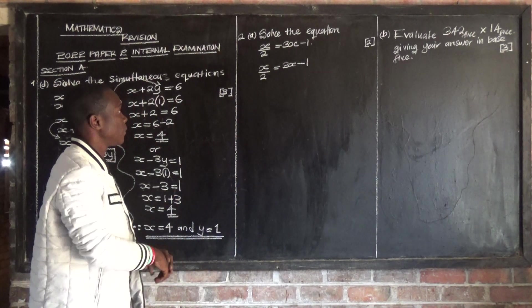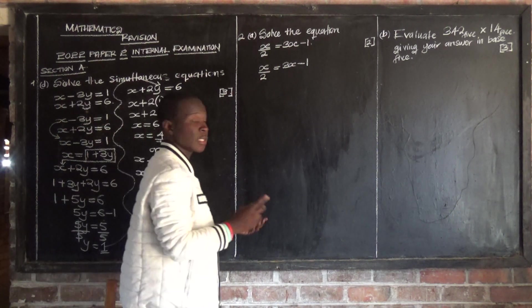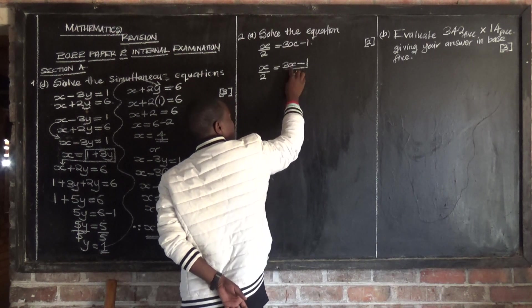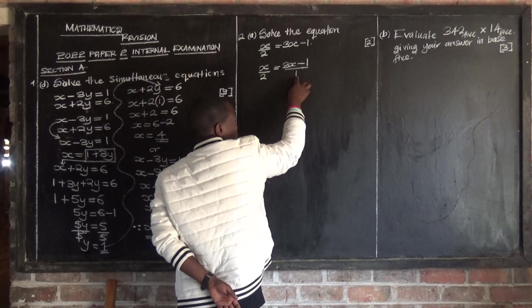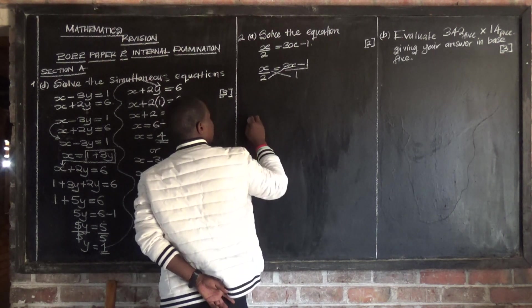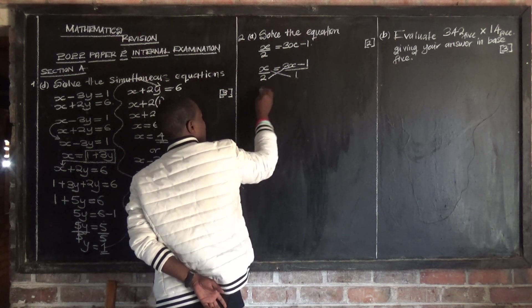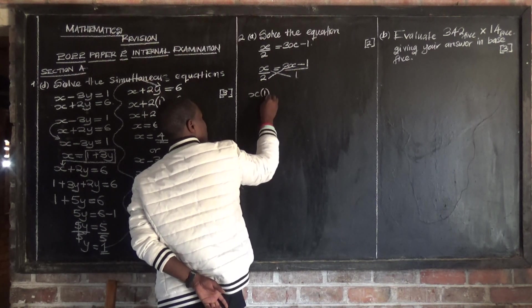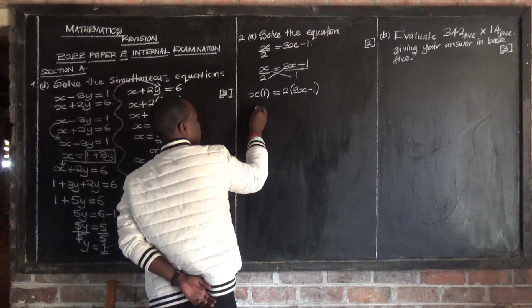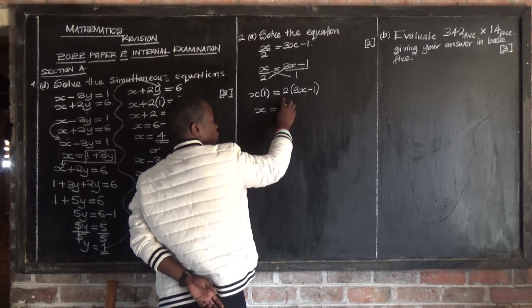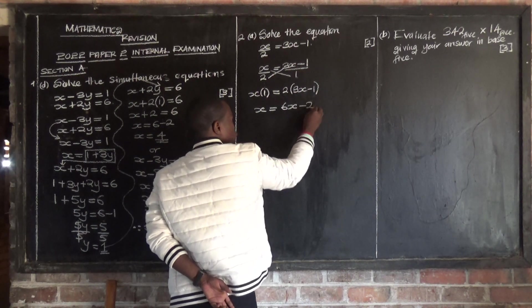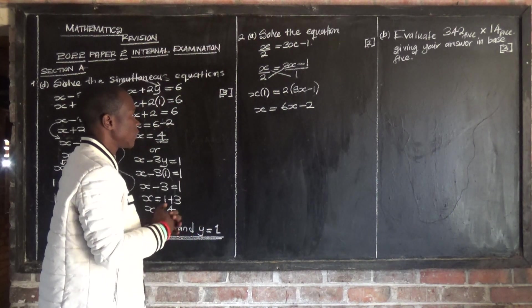Are we together? So what you are going to do is balance up the equation. On this side you have a numerator and denominator. This one can also be written as 3x minus 1 over 1. Then you can cross multiply. So: 1 times x gives x, and 2 times 3x minus 1 — removing the bracket — gives 6x minus 2. Are we together? Then at this level we collect like terms.